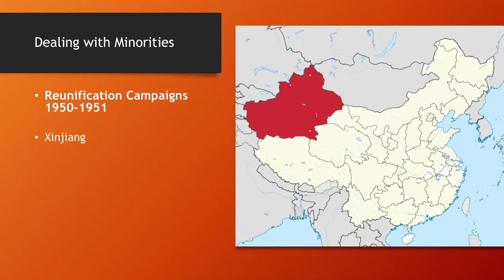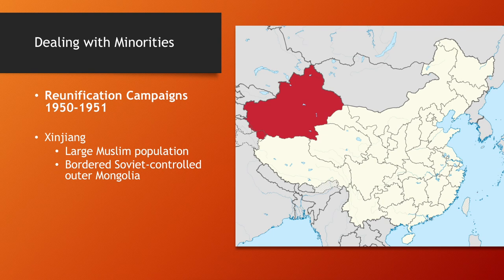In Xinjiang, there was a similar pattern with the Muslims. Xinjiang bordered Soviet-controlled Outer Mongolia, and Mao and the communists were concerned that Xinjiang would be subject to Soviet influence, allowing the Soviets to gain a political and ideological foothold within China. Suppressing opposition and reunifying Xinjiang with central control in Beijing meant it acted as a buffer zone between China and the Soviet Union.